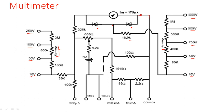This is the common point. The negative terminal of the meter is connected to this common point. This common point will appear in all the circuits — whether it is an ohmmeter, ammeter, or voltmeter — this common point will come in all the circuits.